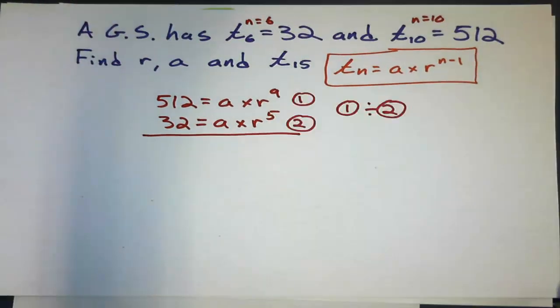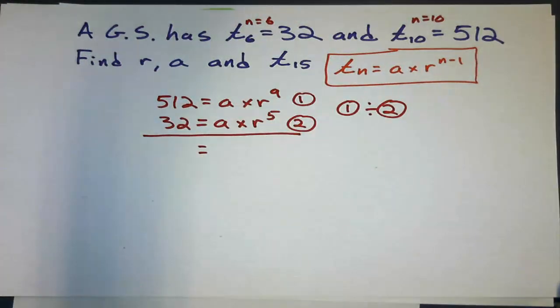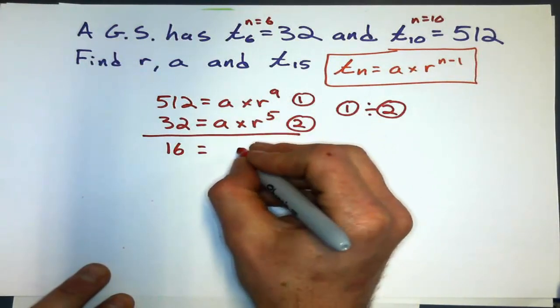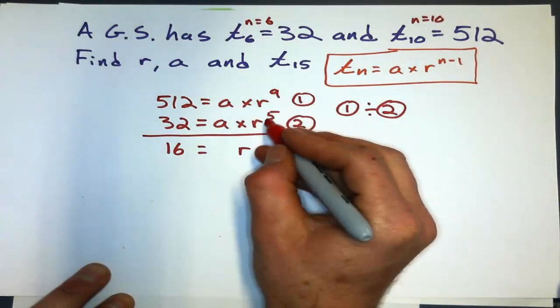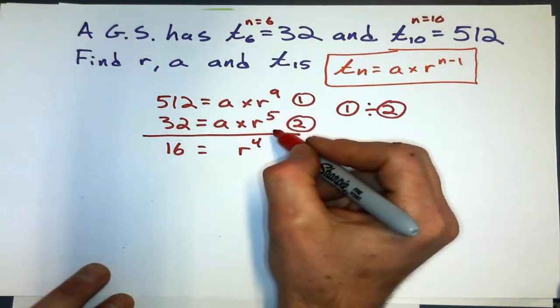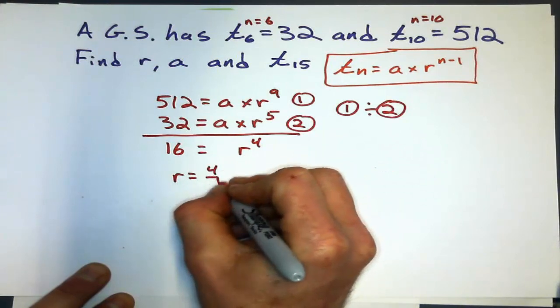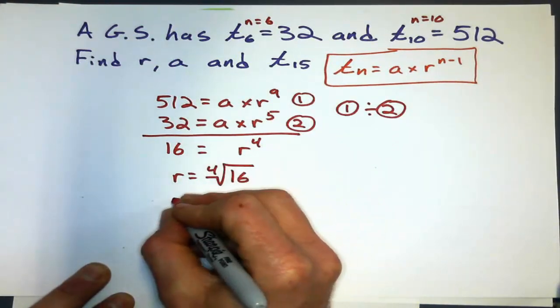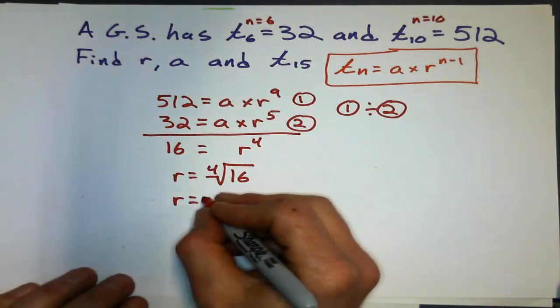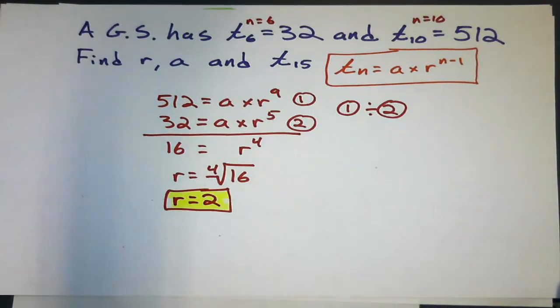Divide the two equations. And I get 512 divided by 32, which is 16. The a's cancel out, giving me 1. And the common ratio, 9 minus 5 is 4. You don't divide those exponents, you subtract them. So now, common ratio is the fourth root of 16, which is, I think it is, 2. Great. Got the common ratio.